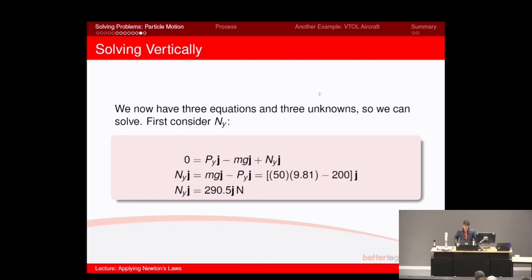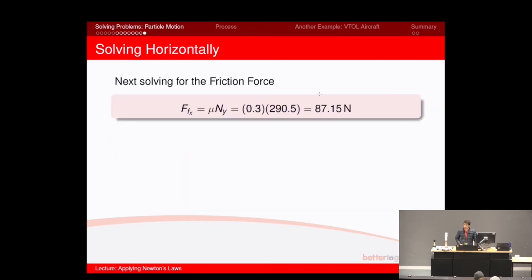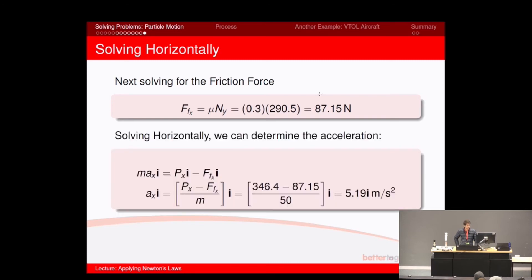Now we've got the magnitude of vector Ny. Next, solve for the frictional force: 290.5 multiplied by 0.3 gives a magnitude of 87.15 newtons — that is the frictional force exerted on the block while it's moving. Now there's only one equation to solve, which is the x-direction equation. The only unknown is acceleration in the x-direction. Adding in all values and solving for ax, we get ax equals 5.19i, meaning it's in the positive direction of the x-axis. The y-component of acceleration is zero, since the block is not accelerating upwards. The vector a has only one component.